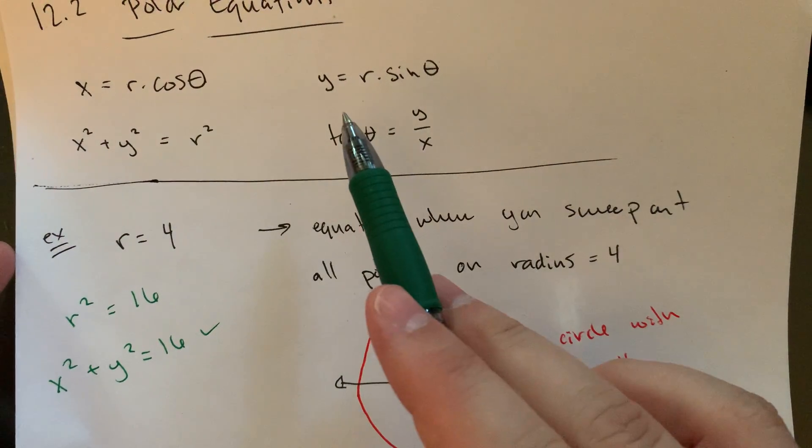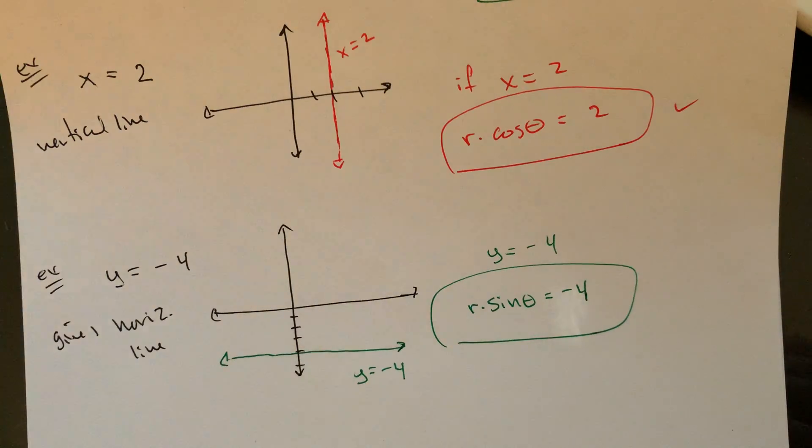And so if y equals negative four, then that means the radius times sine of theta equals negative four. Our other conversion factor here, y is going to be the r times sine of theta.